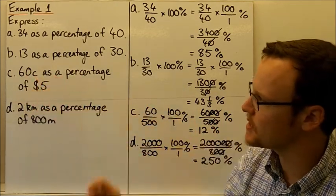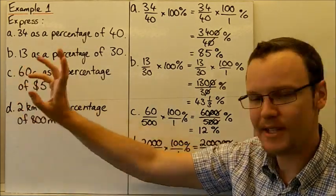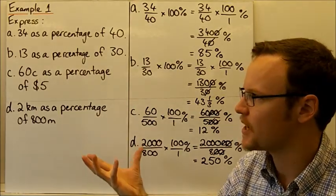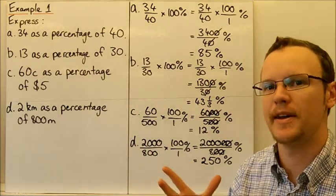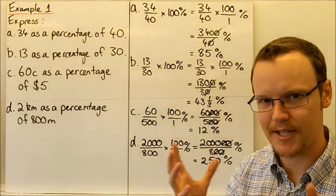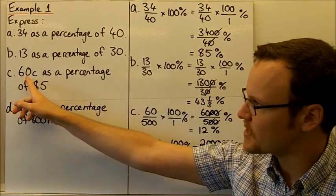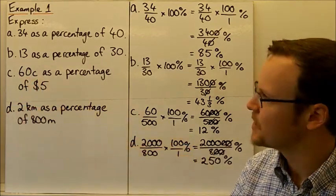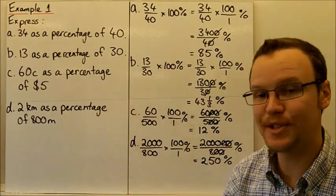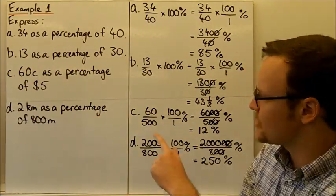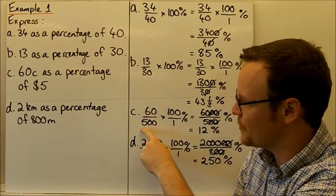This one here, 60 cents as a percentage of $5. So you'll notice that they're not in the same units there. They're not the same sort of representation, and it's difficult to compare them. We can't compare them as is, we need to make sure they're the same unit. So if we can convert the $5 to cents, then we've got 60 cents and 500 cents. So the part is 60 cents, that's the part that we've got, and the whole is 500 cents. So 60 out of 500, so that's the $5 on the bottom there, 500 cents, and 60 cents on the top.